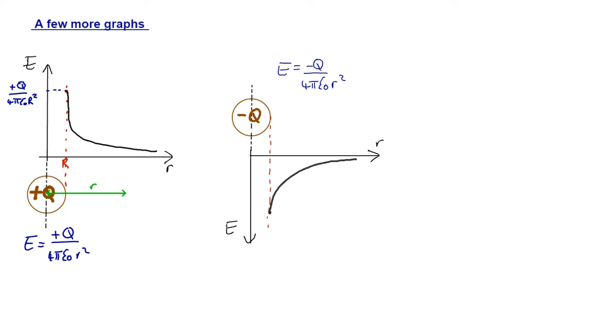And also we know the value of electric field strength at the surface, in exactly the same way as before, is going to be minus Q over 4πε₀ big R². And that's big R, the radius of the sphere. Good.